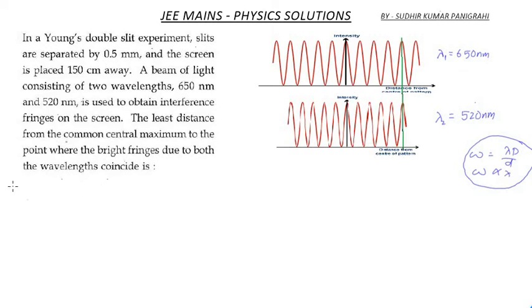Now we also know that position of maximas are given by the formula N lambda D by d. The question asks, where again after central maxima will the bright fringes coincide?